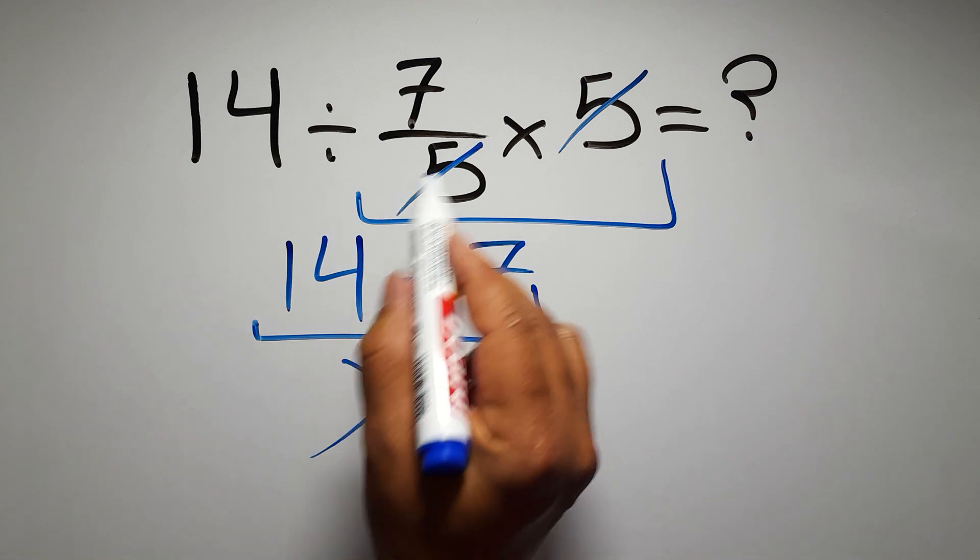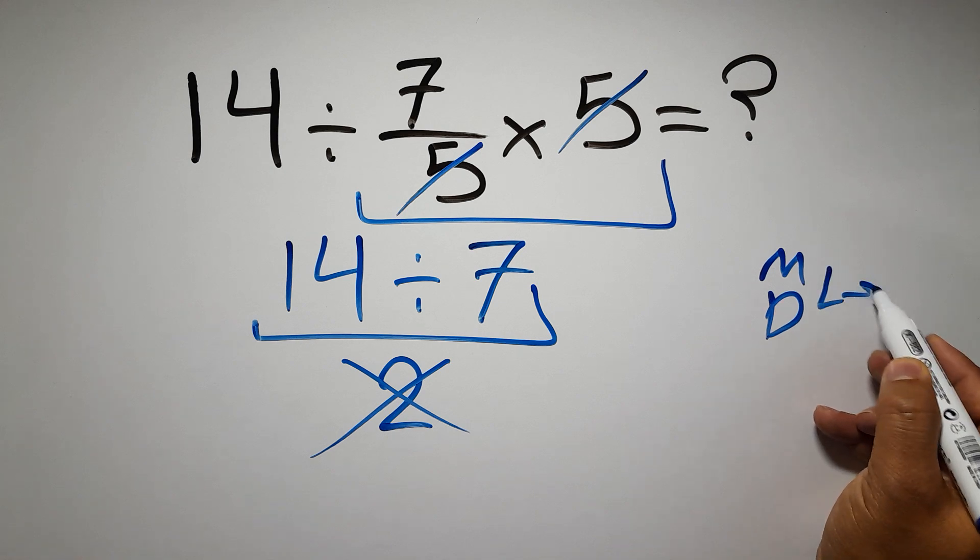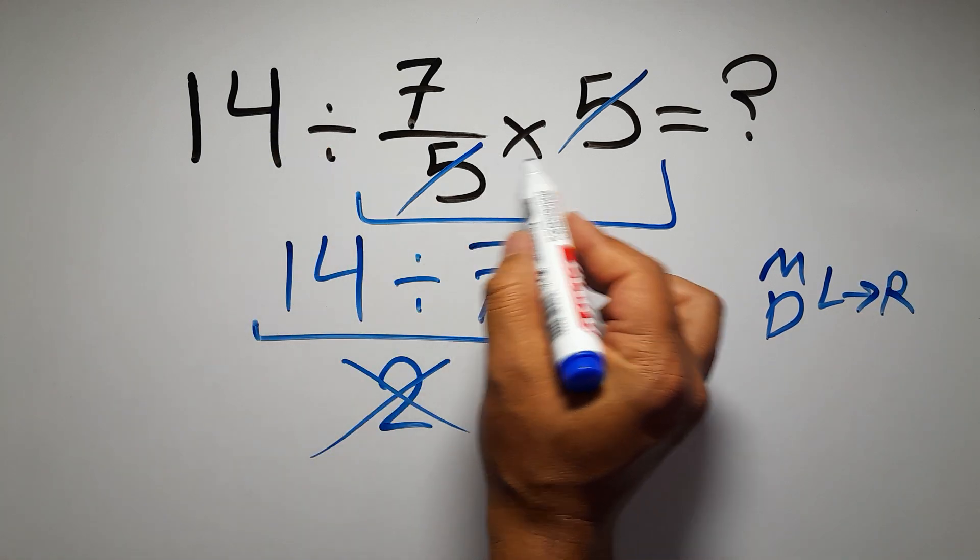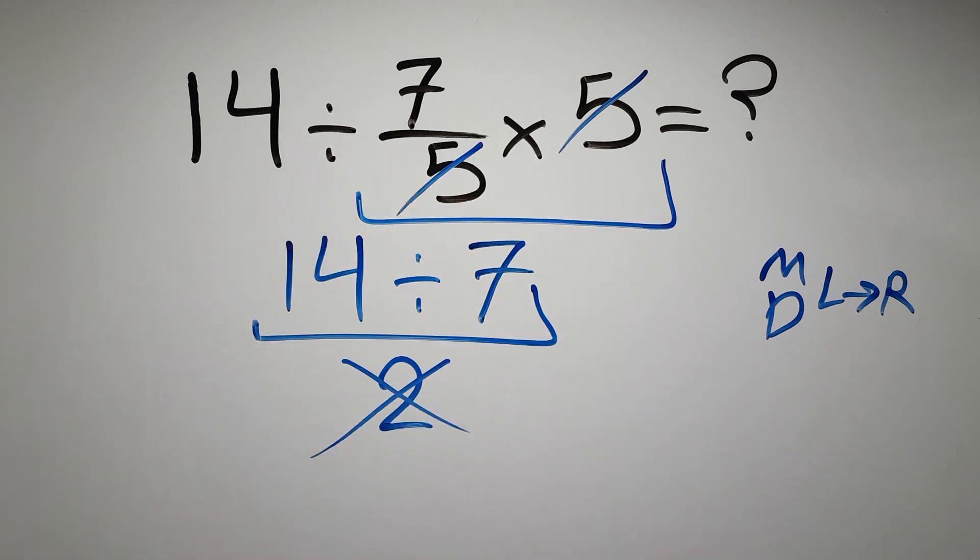to the rule of operations, multiplication and division have equal priority, and we have to work from left to right. So here, first we have to do this division, then this multiplication. If we do this multiplication before this division, it is wrong.